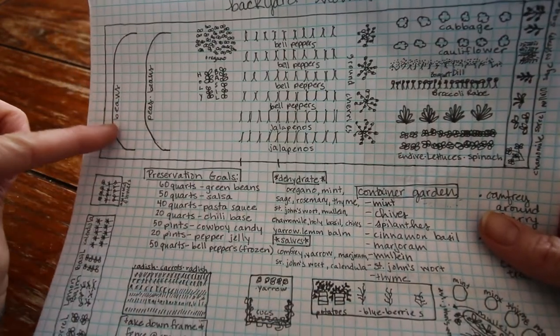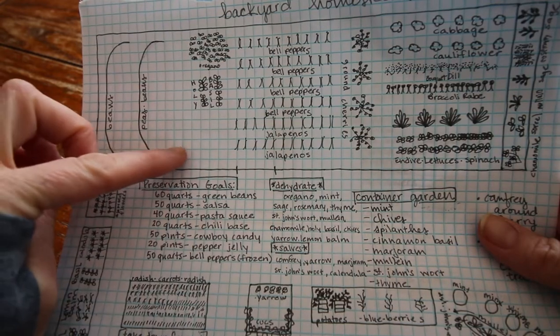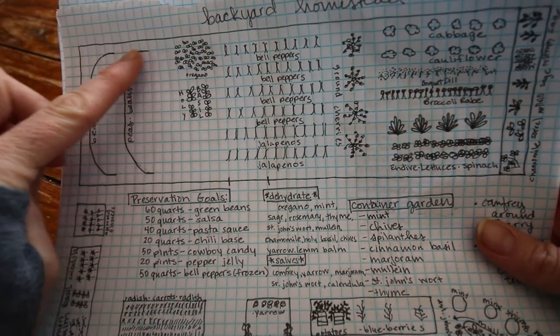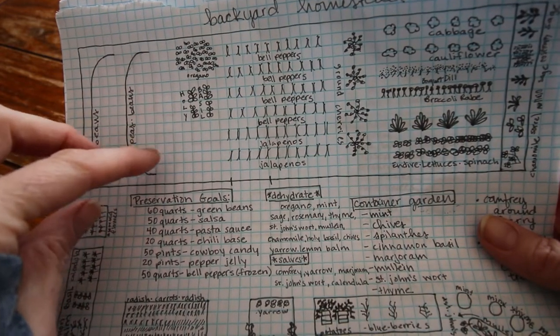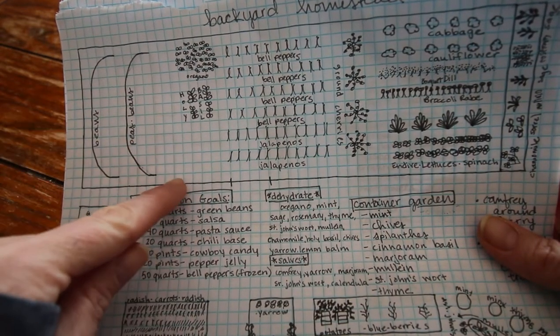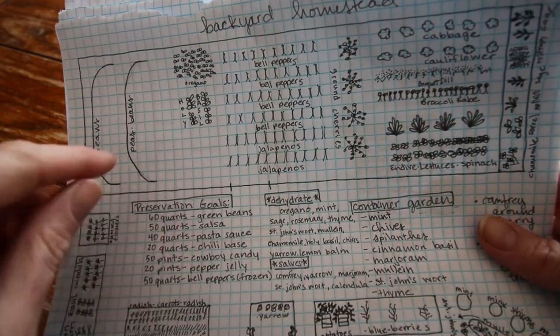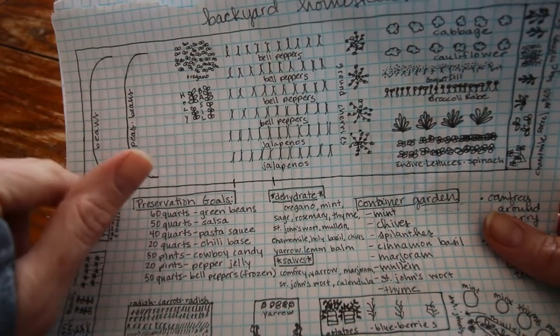So this year I'm gonna put our beans and our peas. I'm gonna kind of curve a cattle panel a little bit here and a little bit here. Last year this pretty much rusted. But this is gonna be the peas and the beans.